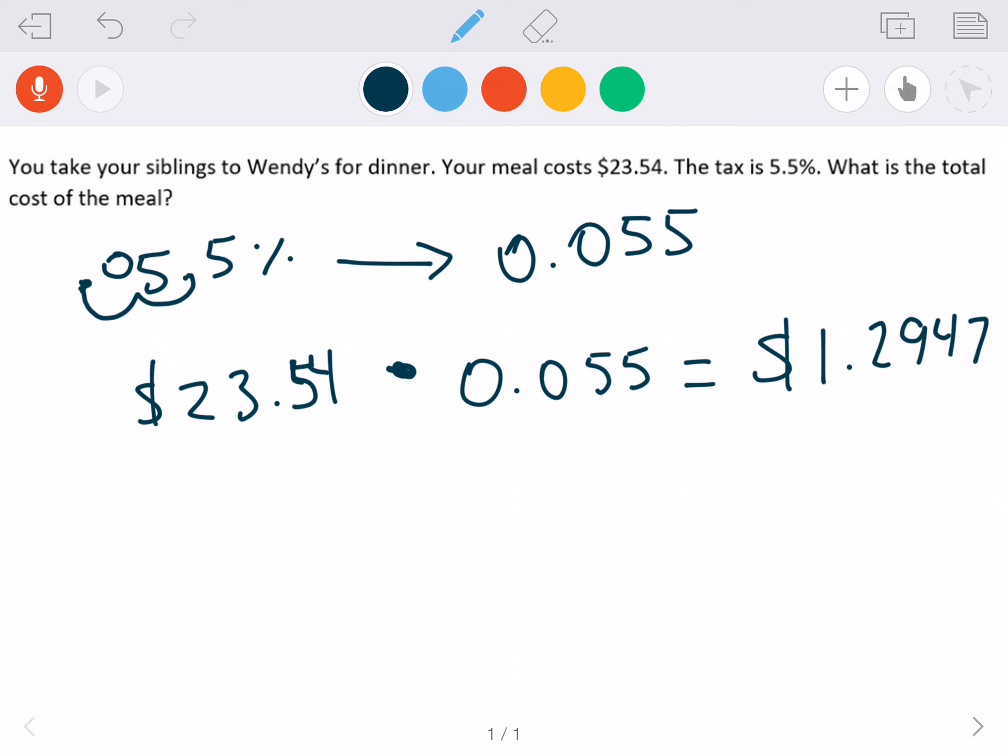So $23.54 times 0.055 is going to give us 1.2947. Now 1.2947, that's four decimal places. With money, we always want to round it to two decimal places. So $1.29, that is how much tax we have to pay.